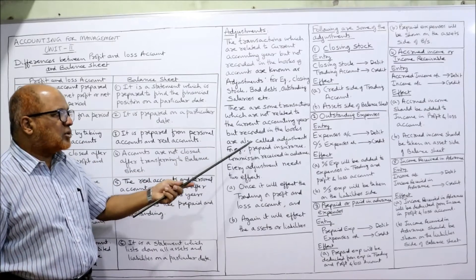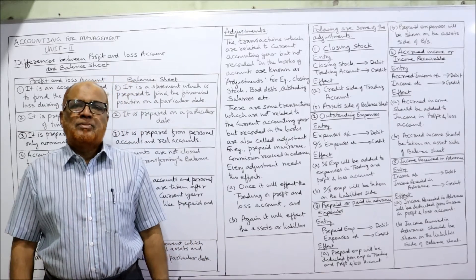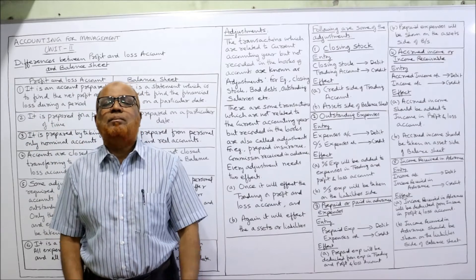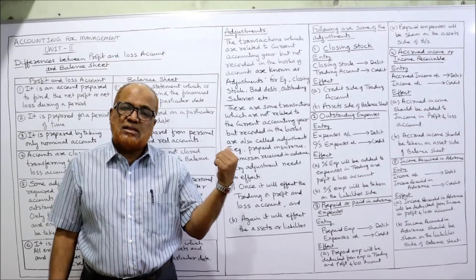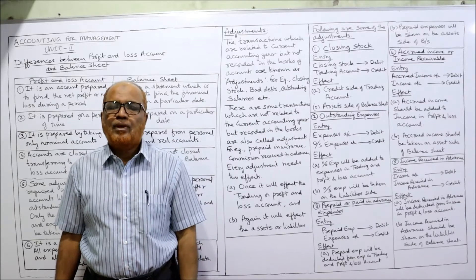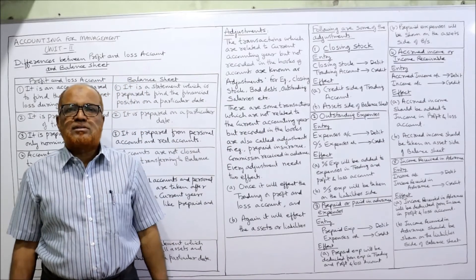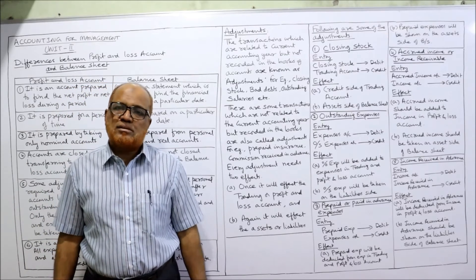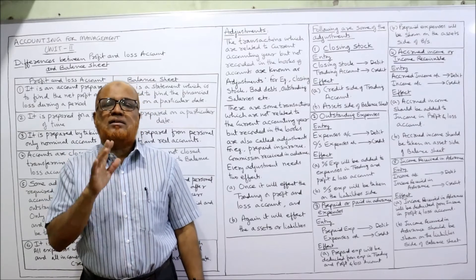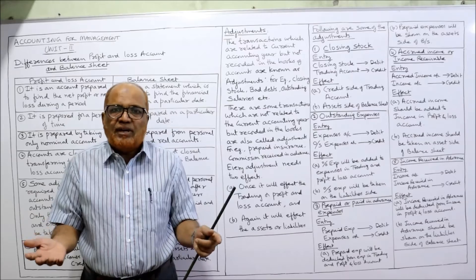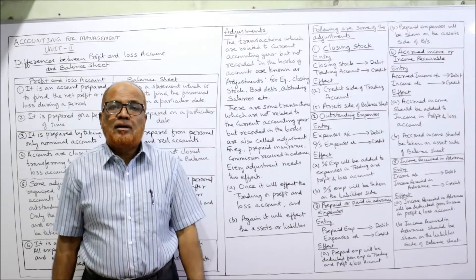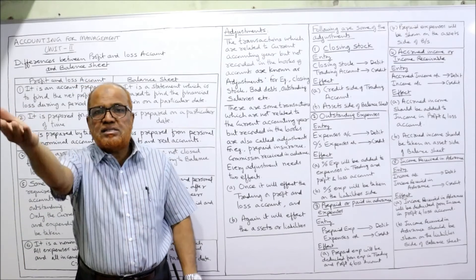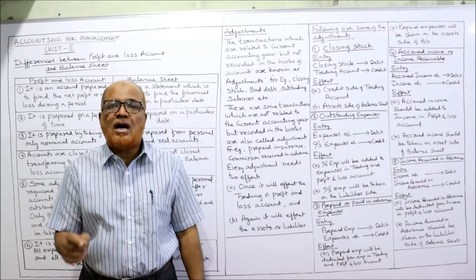Similarly, there are some transactions which are recorded in the books but do not relate to the current accounting year — these are also called adjustments. Those transactions may be related to the last year or the next year. Examples of these items are prepaid insurance or income received in advance — amounts received but not belonging to the current period — or insurance paid in advance which relates to the next year but recorded in the current year. All of these require adjustments.